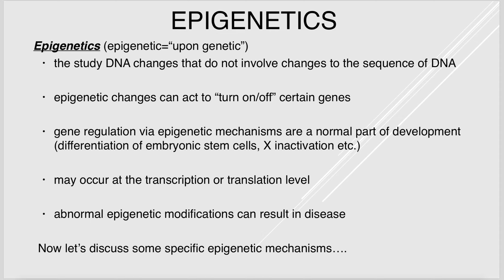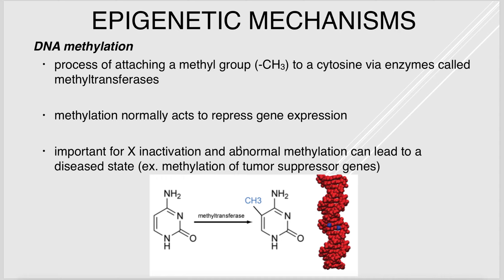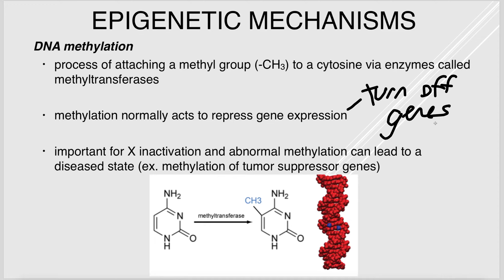Epigenetics can result in disease. The first mechanism is DNA methylation — attaching a methyl group to a cytosine — which typically represses or turns off gene expression. This is important for X inactivation. If a tumor suppressor gene is methylated and turned off, that can result in cancer formation.